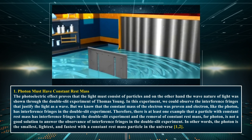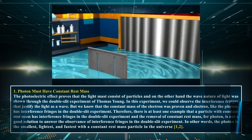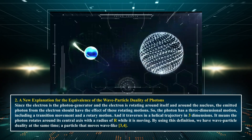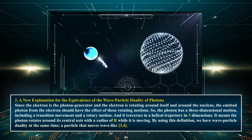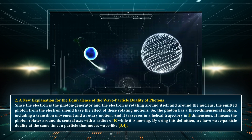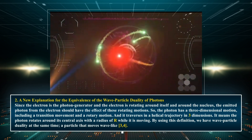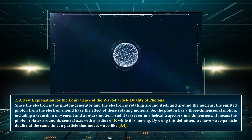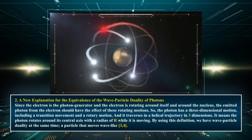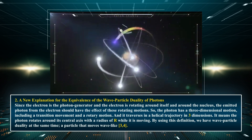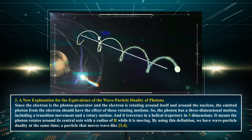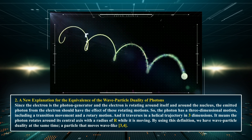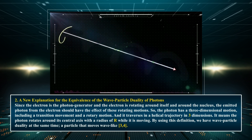In other words, the photon is the smallest, lightest, and fastest particle with a constant rest mass in the universe. A new explanation for the equivalence of the wave-particle duality of photons: since the electron is the photon generator and the electron is rotating around itself and around the nucleus, the emitted photon from the electron should have the effect of these rotating motions. So the photon has a three-dimensional motion, including a translational movement and a rotary motion, and it traverses a helical trajectory in three dimensions. It means the photon rotates around its central axis with a radius of r while it is moving. By using this definition, we have wave-particle duality at the same time — a particle that moves wave-like.